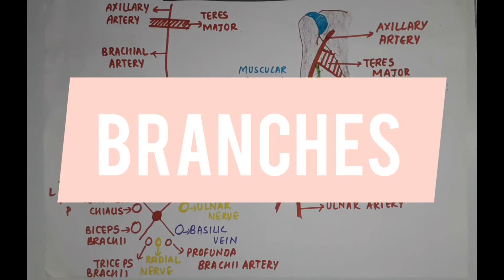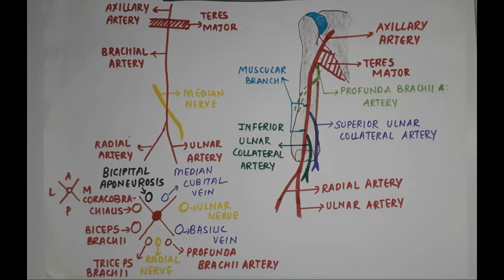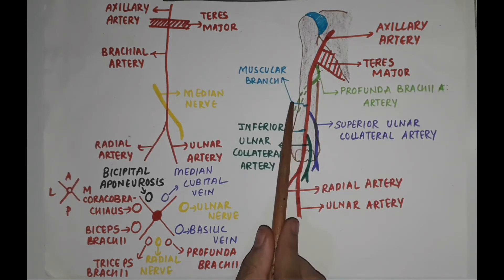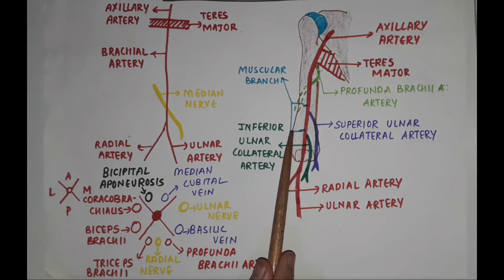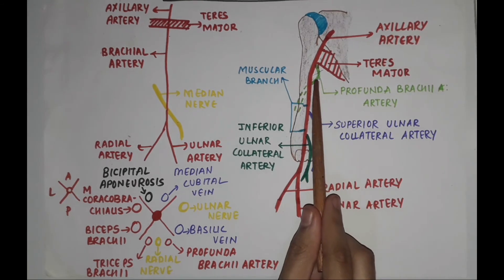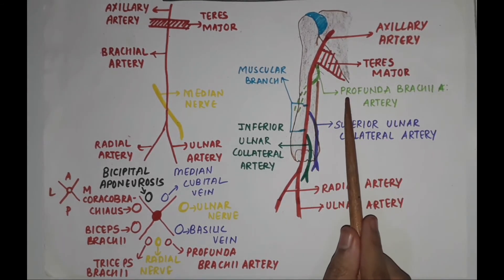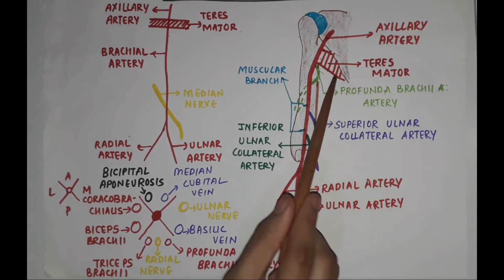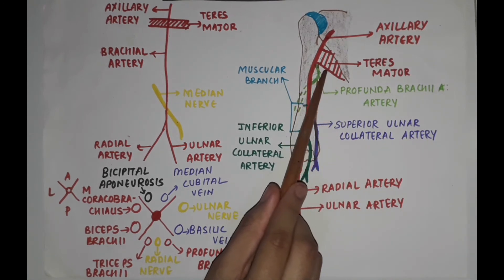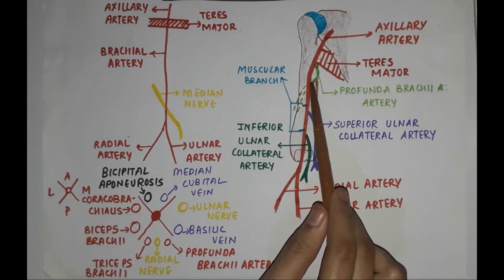Branches of the brachial artery. The first branches are unnamed muscular branches which supply various muscles on the front of the arm. The second branch is the profunda brachii artery. This light green color artery represents the profunda brachii artery, which arises just below the teres major muscle and accompanies the radial nerve into the intermuscular space.